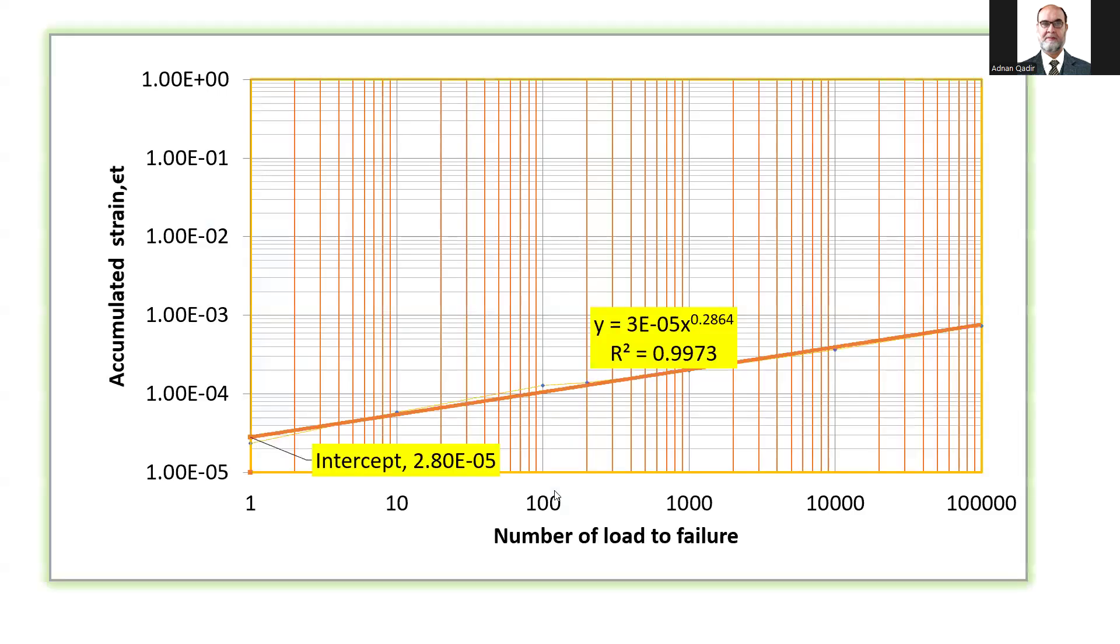What we need to know is, again, we have to plot number of repetition loads to failure to accumulated strain. I've come up with this equation that has a slope of 0.2864, a constant of 4.13 times 10 power minus 5, and we have the best fit curve that is 0.9973.